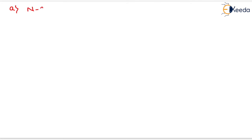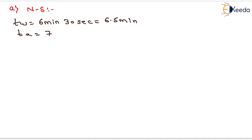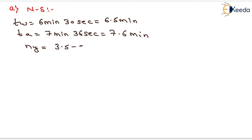We will first solve for the north-south direction, then for south-north. For north-south: TW (journey time with traffic) equals 6 minutes 30 seconds, which is 6.5 minutes. TA (journey time of opposite direction) equals 7 minutes 36 seconds, which is 7.6 minutes. NY equals number of overtaking vehicles minus number of overtaken vehicles, that is 3.5 minus 5, giving minus 1.5. NA equals 179, which is the count given by the observer of the opposite side.